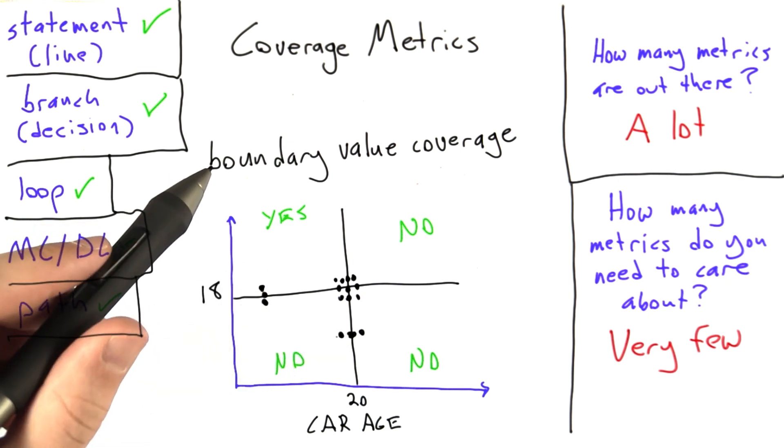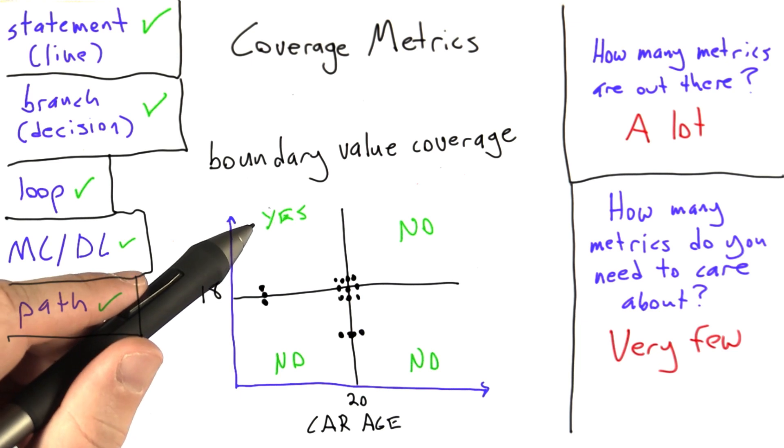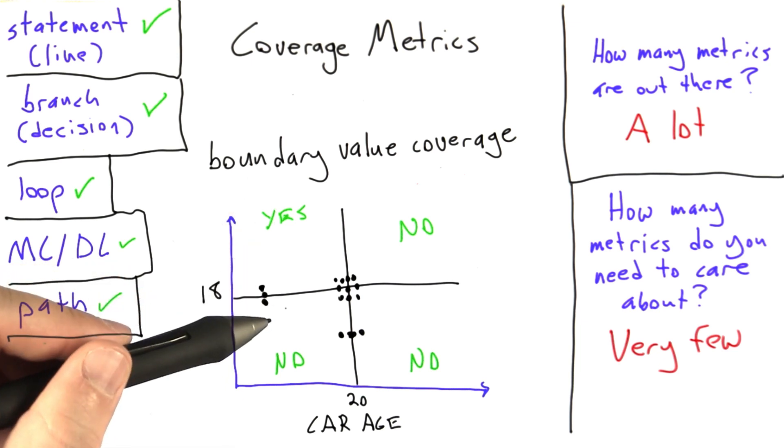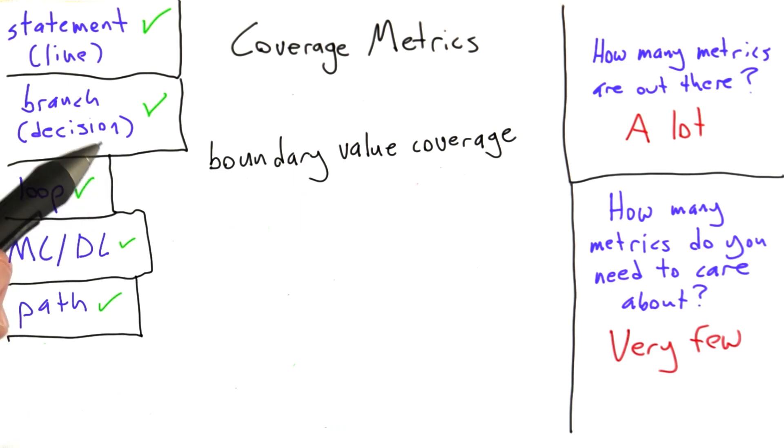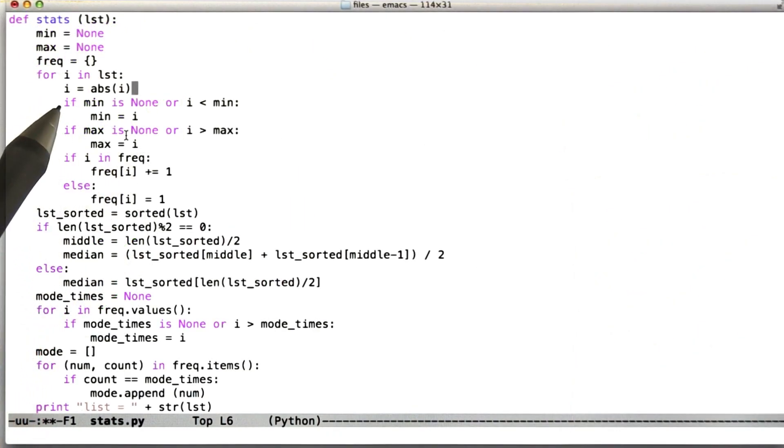Now let's briefly revisit the issue of whether we're doing boundary value coverage with respect to the requirements or the specification for a piece of software, or whether we're doing it with respect to the implementation. Let's go and revisit the program we looked at a little bit earlier, where I inserted a bug into our stats function, which caused it to misbehave for some inputs and not for others.